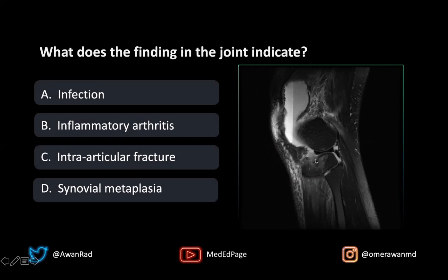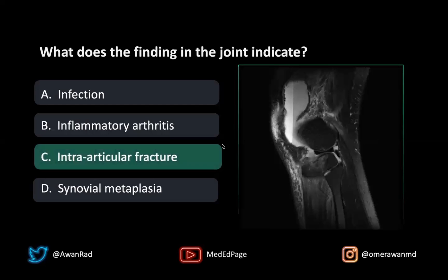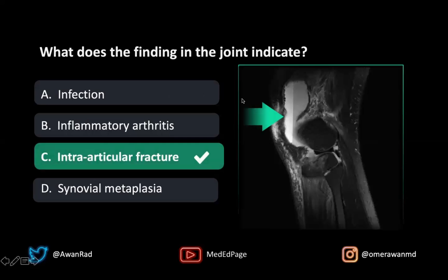This indicates first of all that there's been trauma and that there's a fracture. This case is actually a case of lipohemarthrosis — blood and fat within the joint space. A lipohemarthrosis is a marker for an intraarticular fracture, so the best answer here would be intraarticular fracture. This is not a case of infection because yes, you can get an effusion, but you wouldn't expect different densities of fluid or a straight line in the joint fluid.